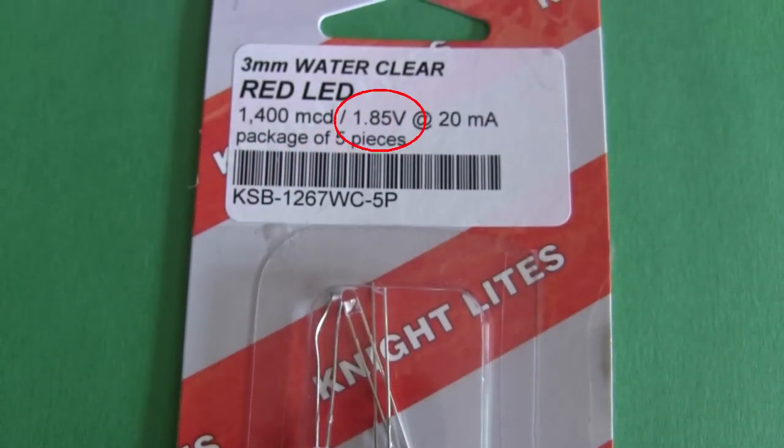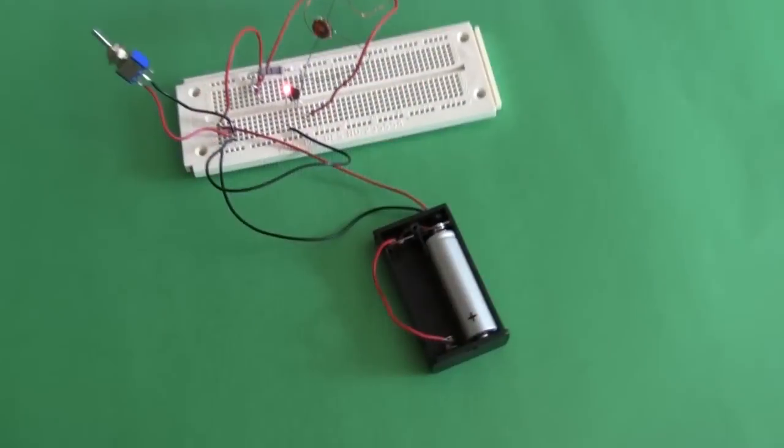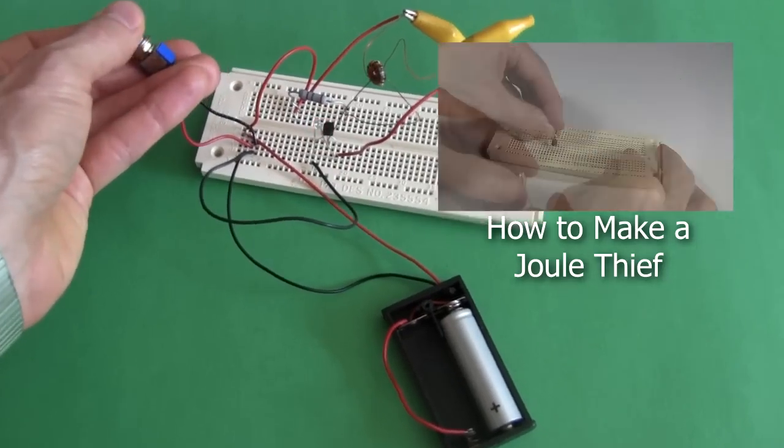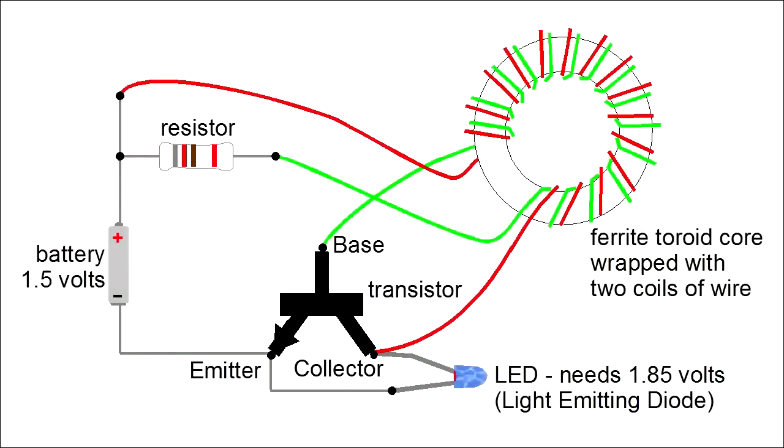For example, this LED needs 1.85 volts, but this is only a 1.5 volt battery. To see how to make this circuit, check out my video, Make a Joule Thief for Zombie Batteries. So on with how it works.